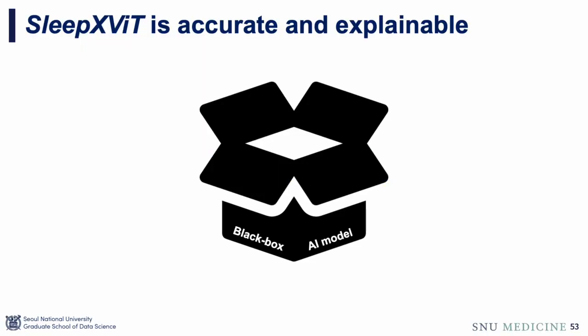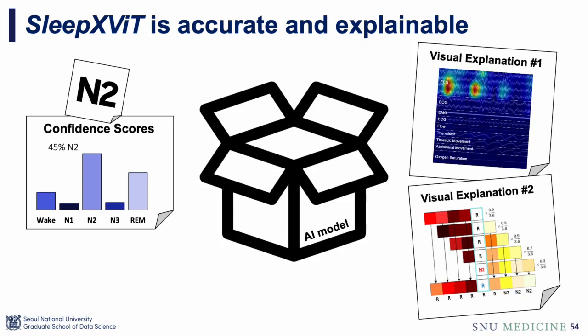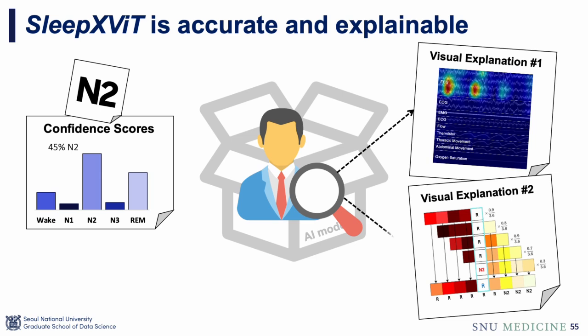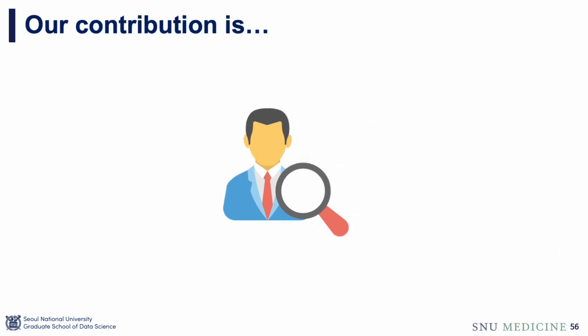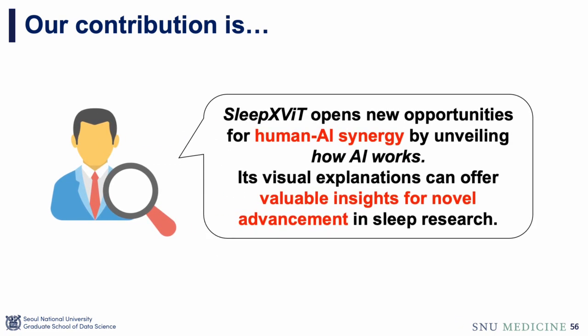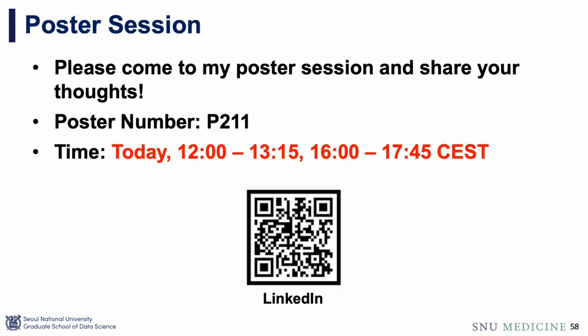Unlike existing black box models, SlipXVIT is accurate and explainable, with well-calibrated confidence scores and supporting visual explanations. Humans only need to review low-confidence epochs, boosting efficiency. SlipXVIT opens new opportunities for human-AI synergy by unveiling how AI works, and we believe its visual explanations can offer valuable insights for novel advancement in sleep research. Thank you for listening, and please visit my poster session if you have further ideas to discuss.